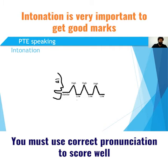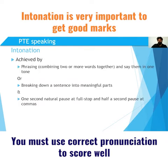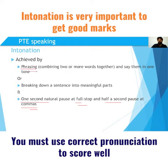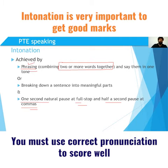Firstly, something known as intonation comes in here. There's a graph showing high and low, which gives you an idea of what it means. For your read aloud, make sure you take a one-second pause at your full stop and just half a second pause at your commas, which is more like just breaking your flow. Another thing known as phrasing is important in all your speaking tasks. A phrase is any two or more words together, so phrasing means all the words of one phrase should be said together in one tone without any pause.